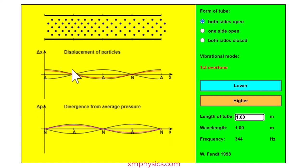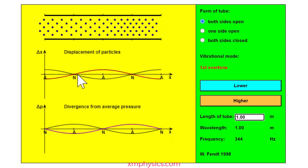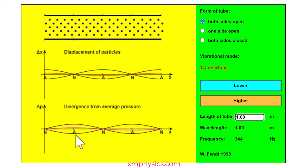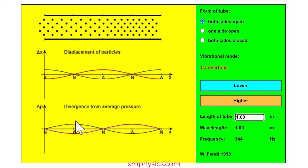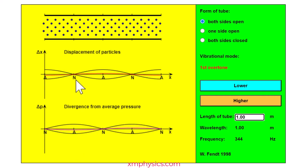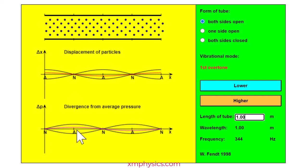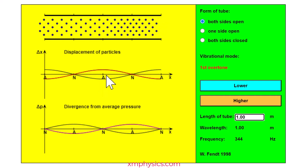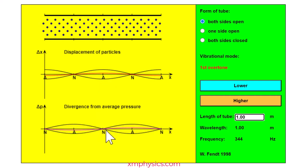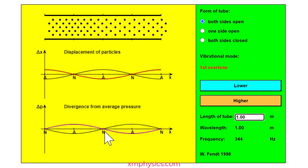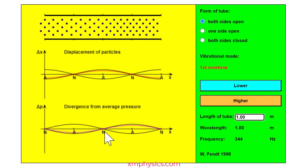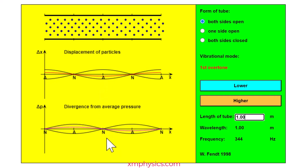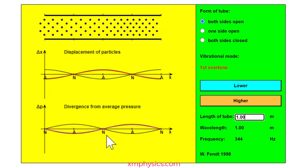Look at this position here. This is a displacement node, but this is the position where the relative pressure is swinging with the largest amplitude. So a displacement node is a pressure anti-node. Now look at this position — this is a displacement anti-node, but at this position the relative pressure is always zero, meaning the pressure is always stuck at atmospheric pressure. So a displacement anti-node turns out to be a pressure node.